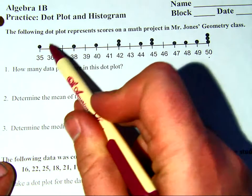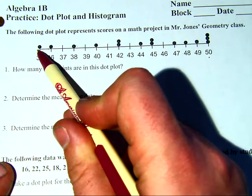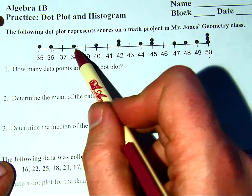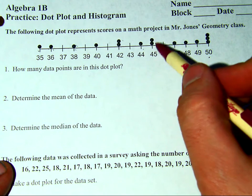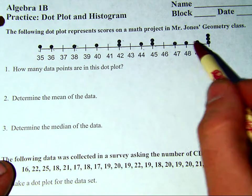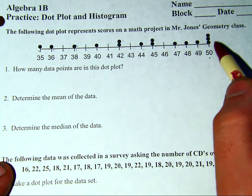Now each of these represents a single score. So that means one kid got a 35, one kid got a 36, one got a 38, one got a 40, two got a 42, one got a 44, two got 45, none got a 46, except three kids got a 50 apparently.